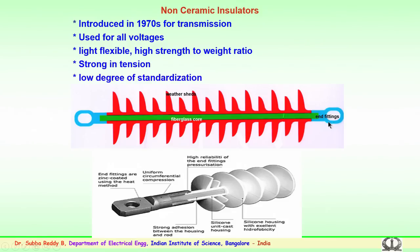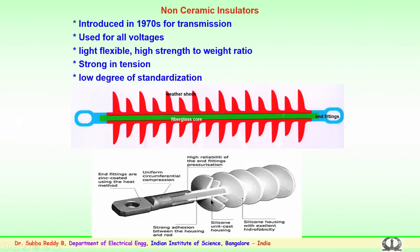A typical polymer insulator has metal end fittings, a fiberglass rod connecting them internally, and weather sheds — silicon rubber or composite material — embedded on this rod. The end fittings are properly crimped to the fiberglass rod. There is uniform circumferential compression near the end fittings, high reliability of end fitting pressure, and strong adhesion between the housing and the rod. The silicon unit cast housing provides excellent hydrophobicity.